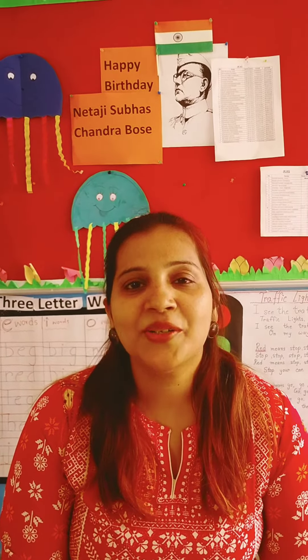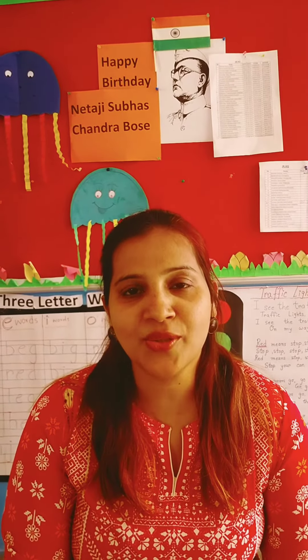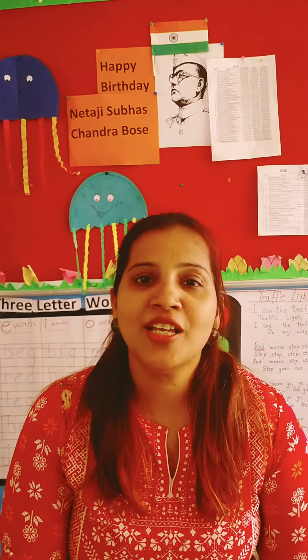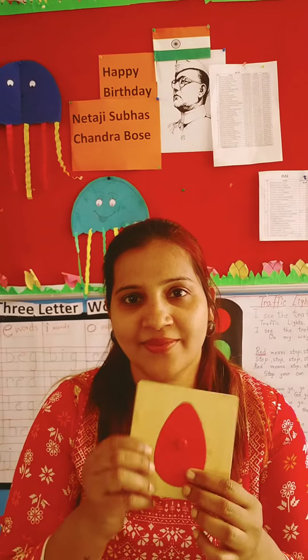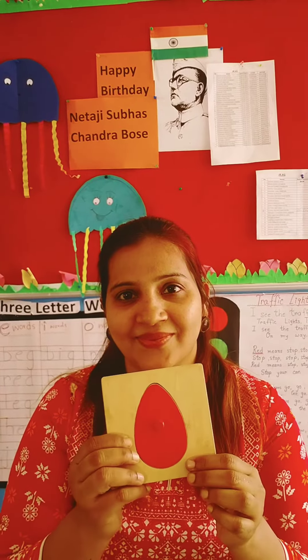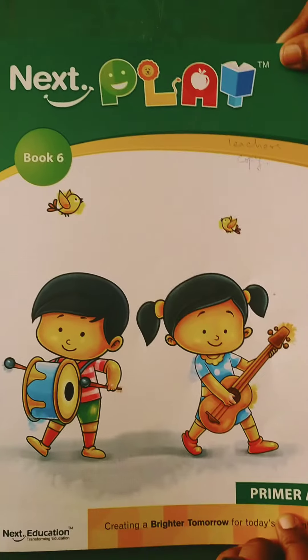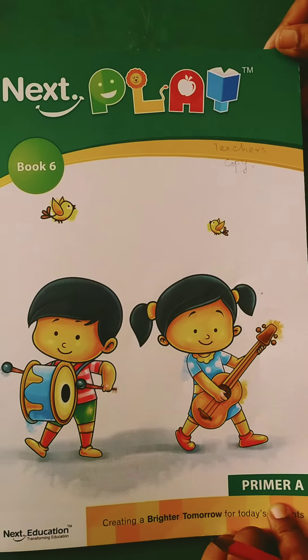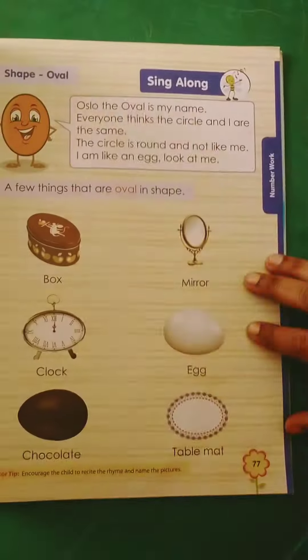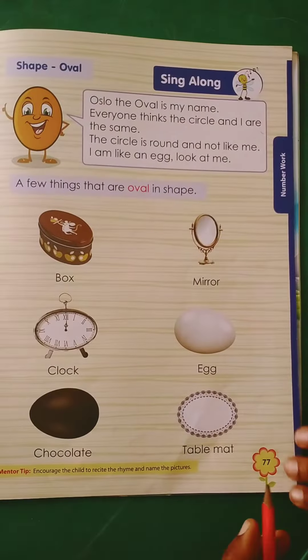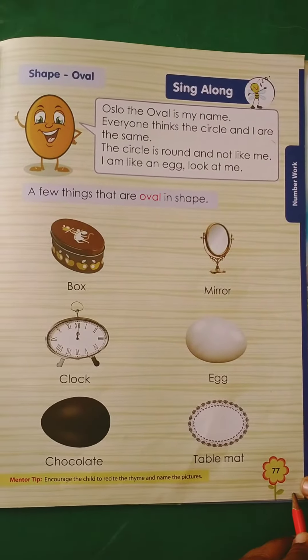Good morning children. Today we are going to learn about the new shape oval. So children, take your book number 6 and open the page number 77.